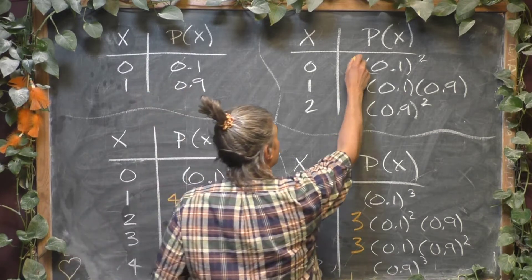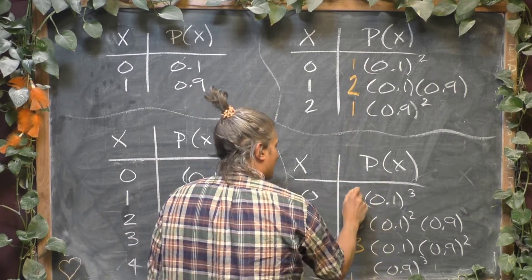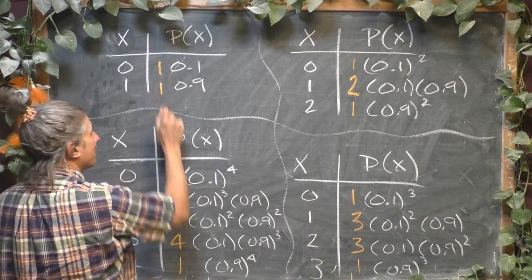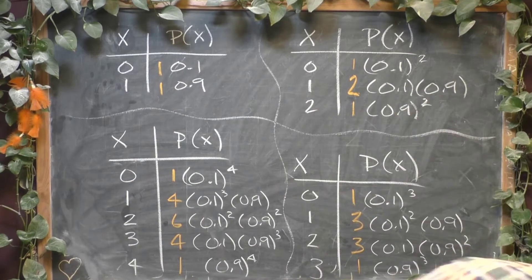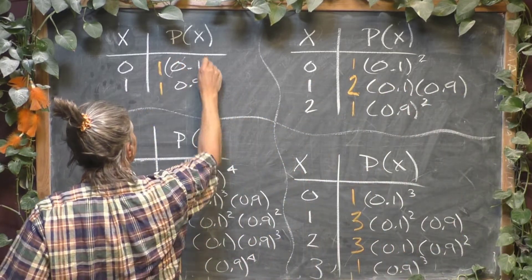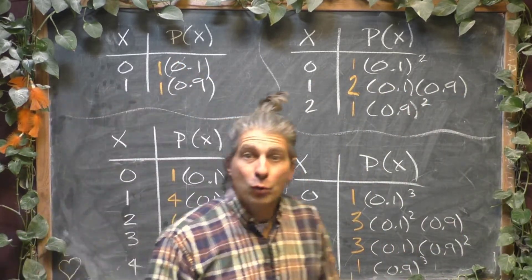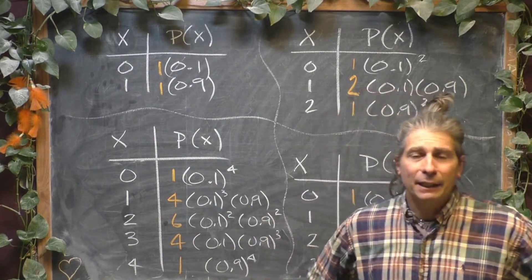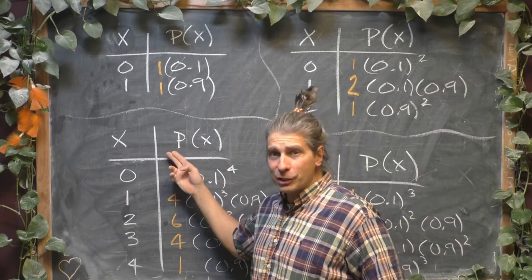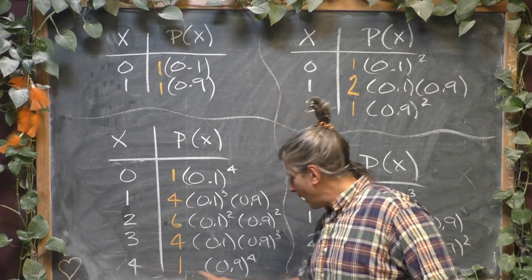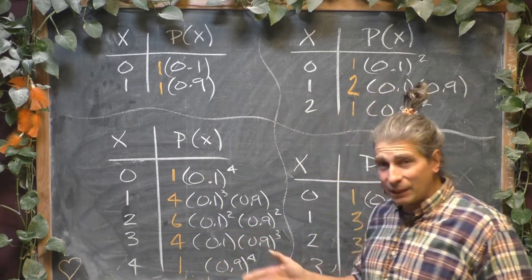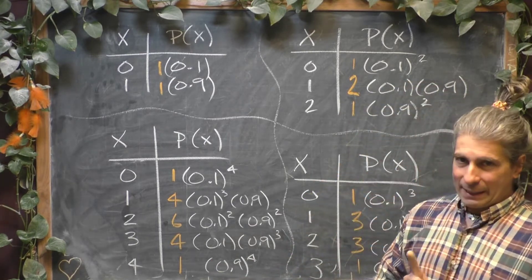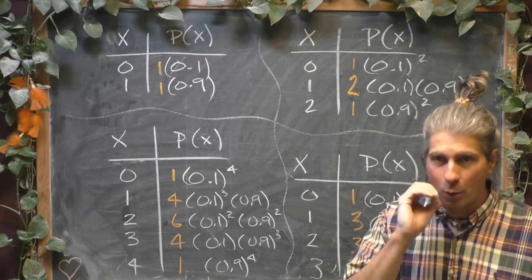All the other ones technically have a coefficient of one. Even up here, even up there, because there's only one way for each of those to happen. It's not super exciting, but if you buy four birds, there's only one way that they can all be female. So, it's still a coefficient.